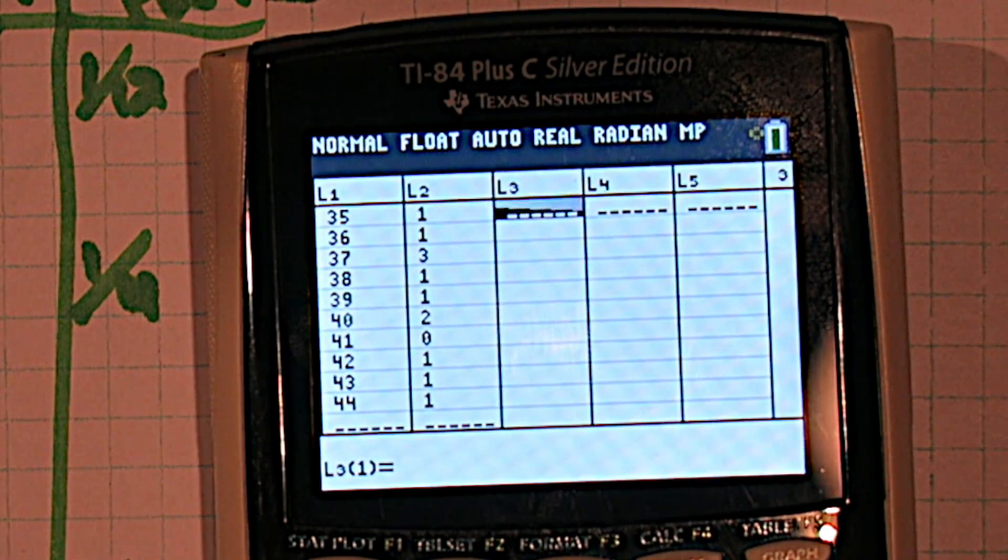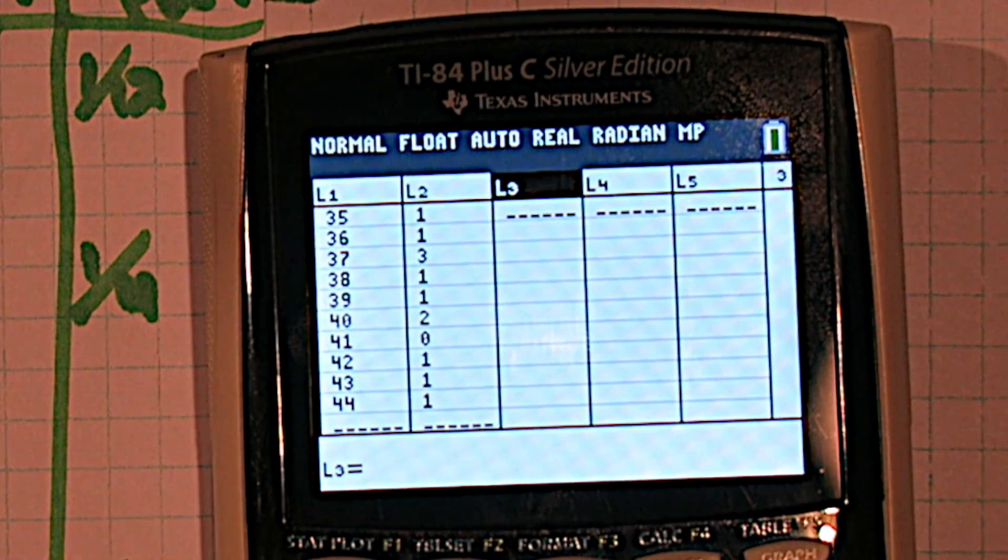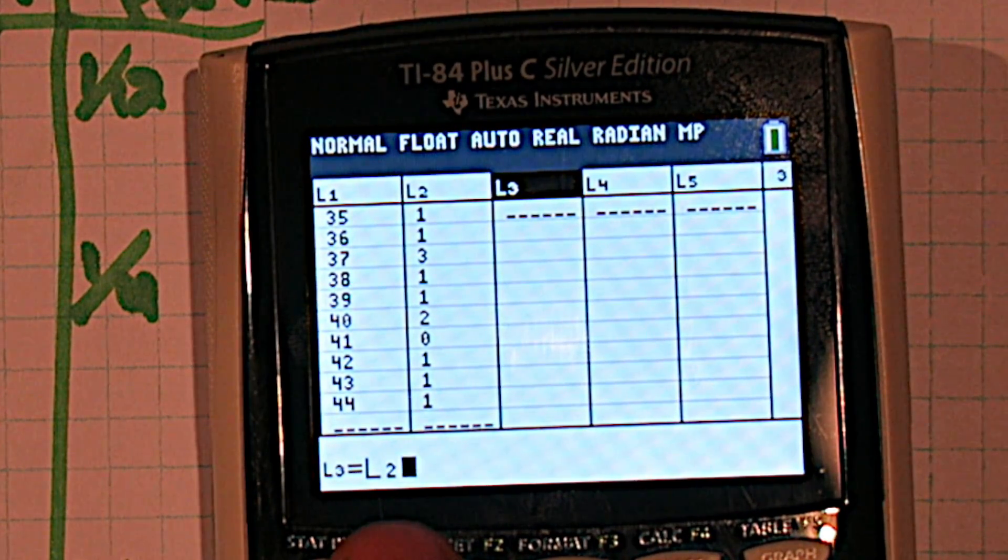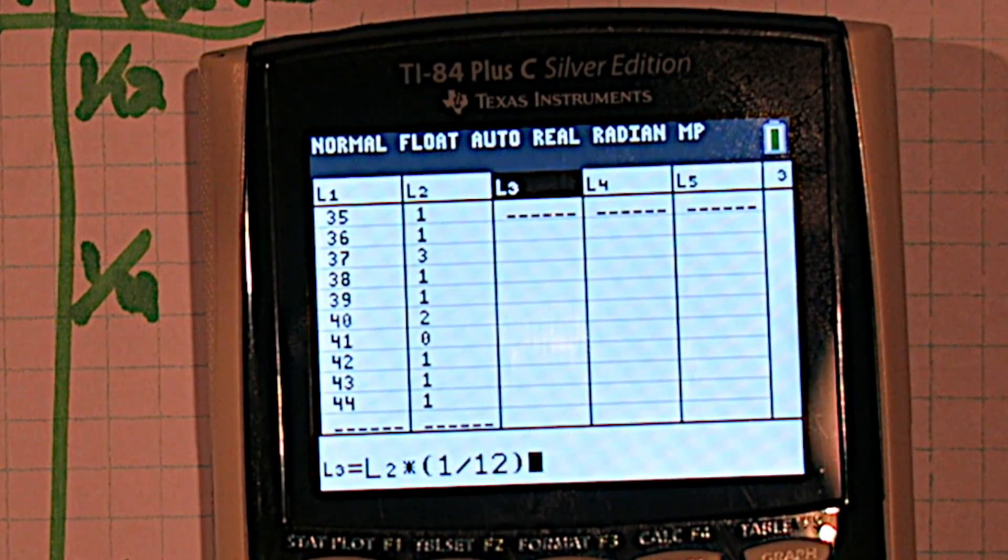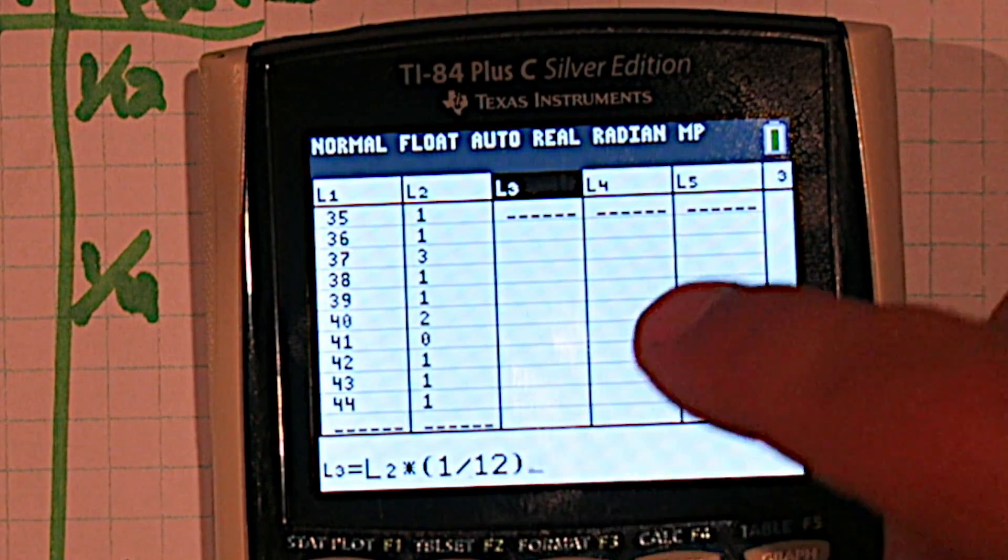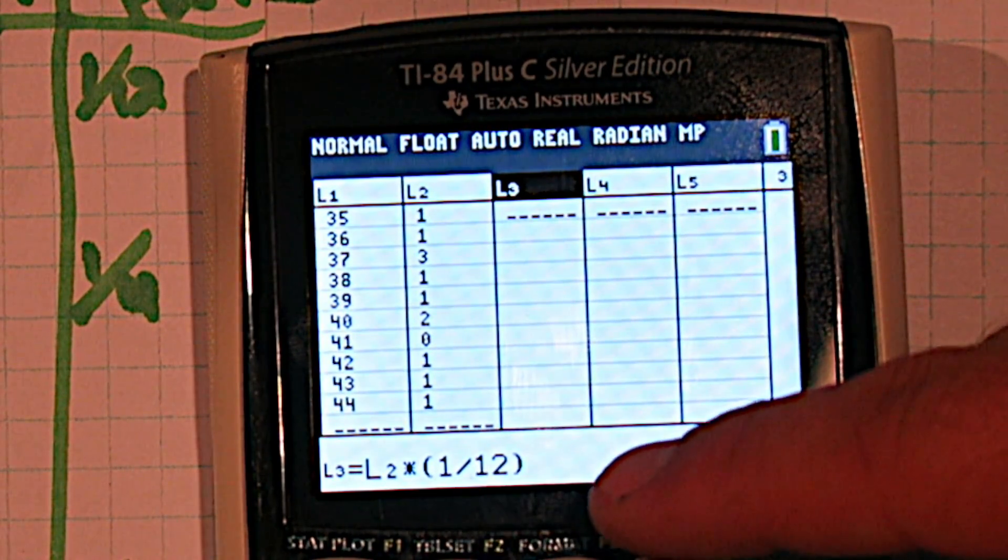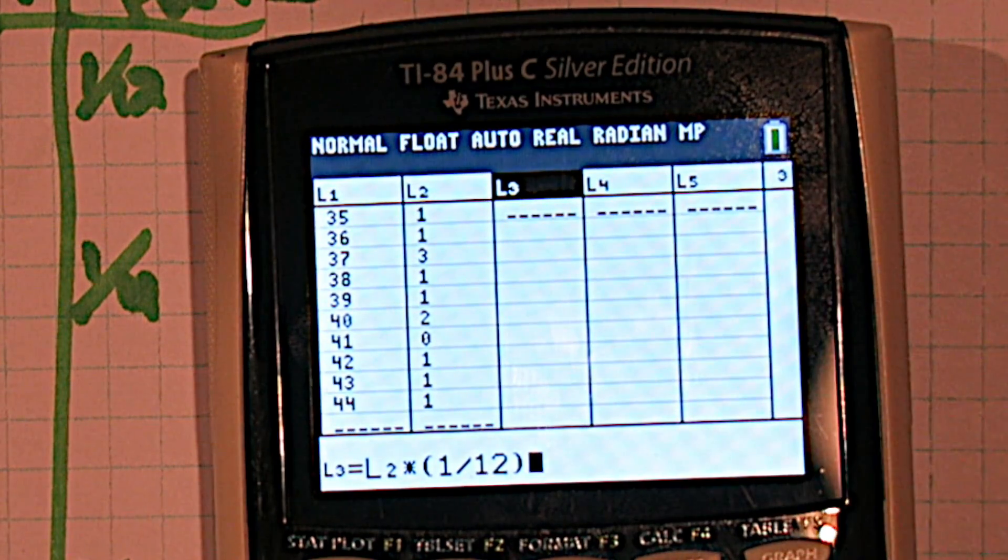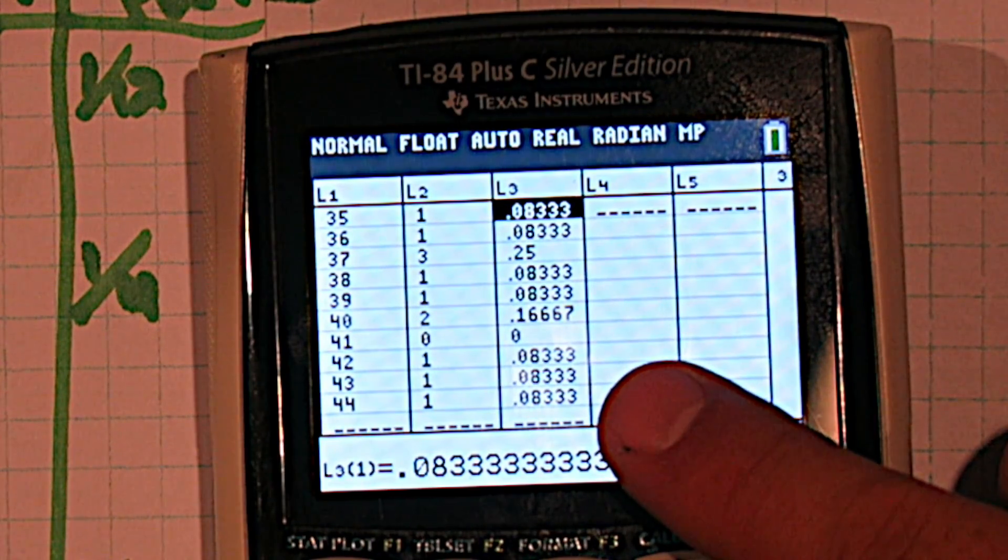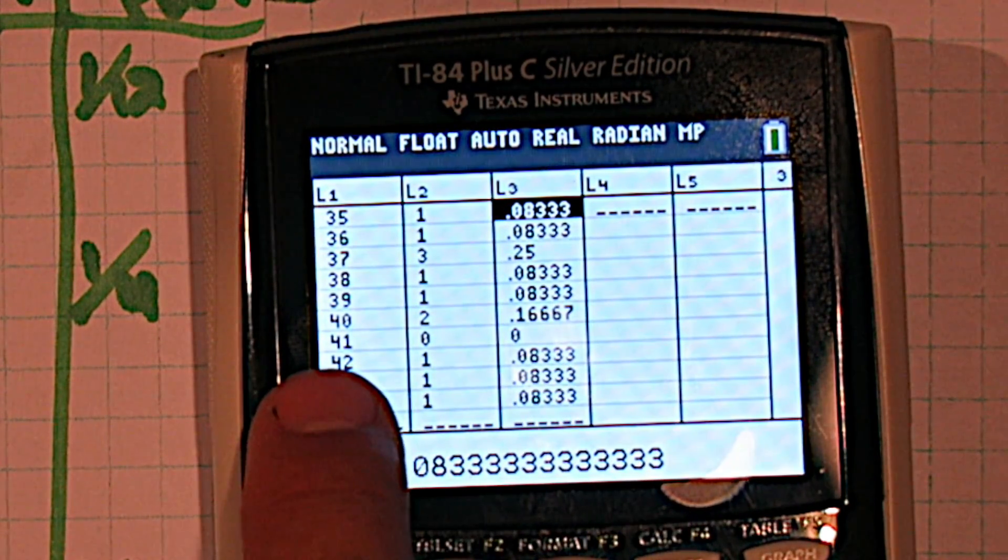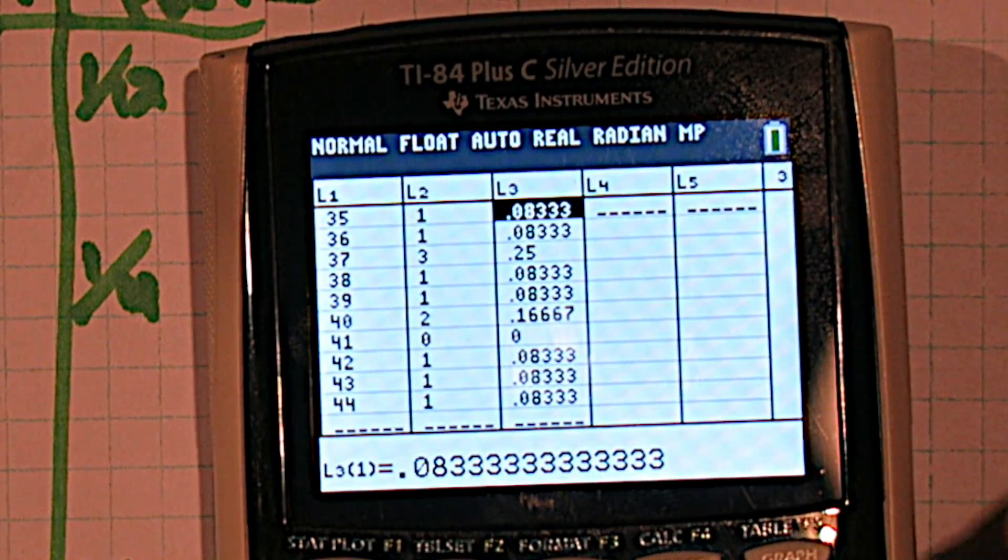Now's where it gets fun. We're going to push the up button, highlight list 3, and we're going to say take list 2. So I'm going to press second and the number 2. So now it says list 2 right here. And I'm going to have that multiply it by 1/12. What that's going to do is every value here that has a 1, it's going to put a 1/12 in this column. This one that has a 3, it should do 3 times 1/12. So we should observe a 0.25 there. What list 3 is representing is the relative frequency. Right here at 40, we can see 16.6 repeating percent of our acorns were 40 millimeters in size.